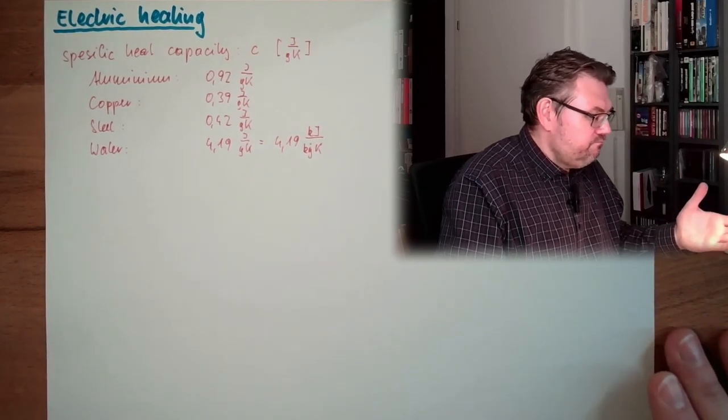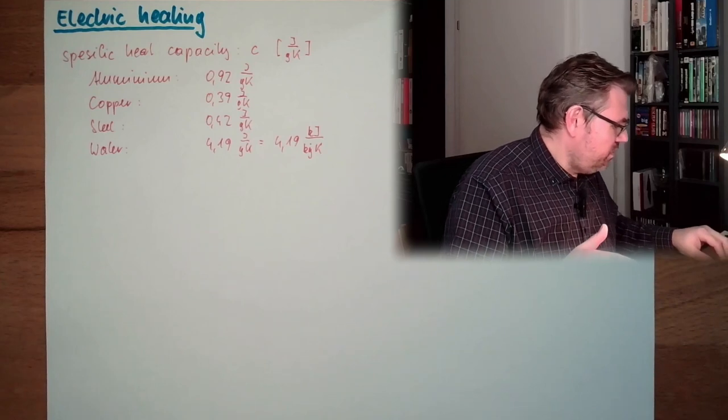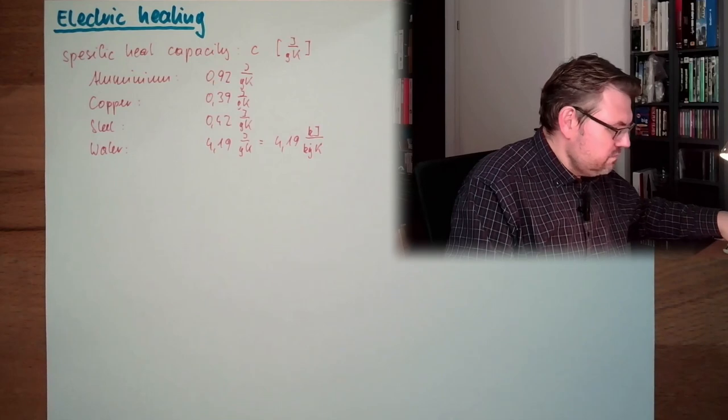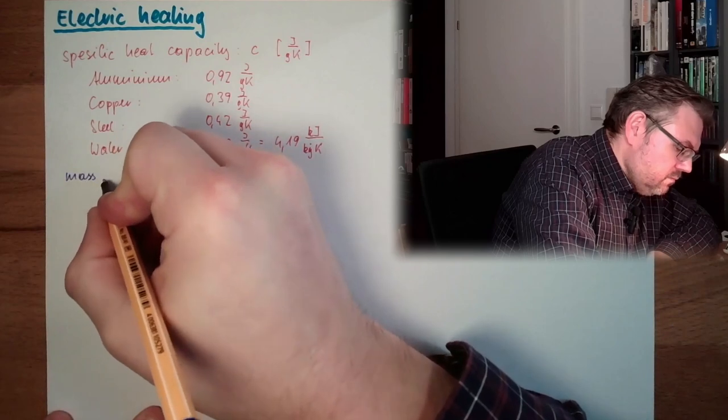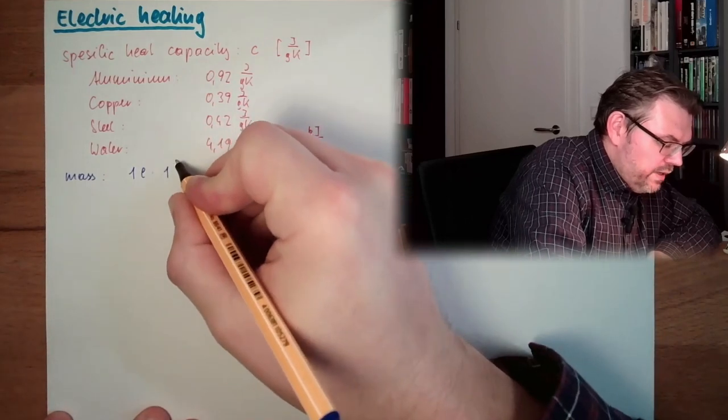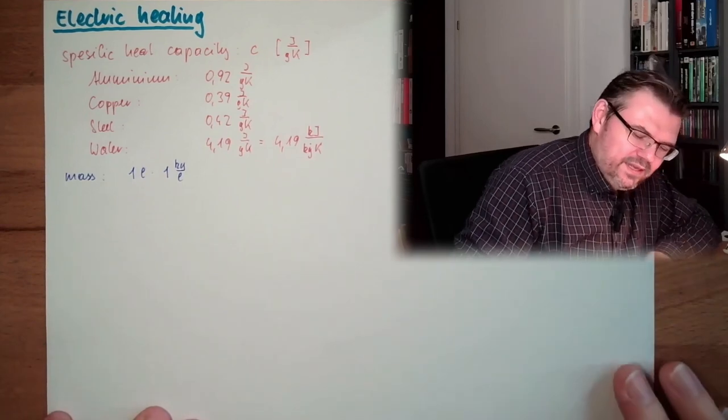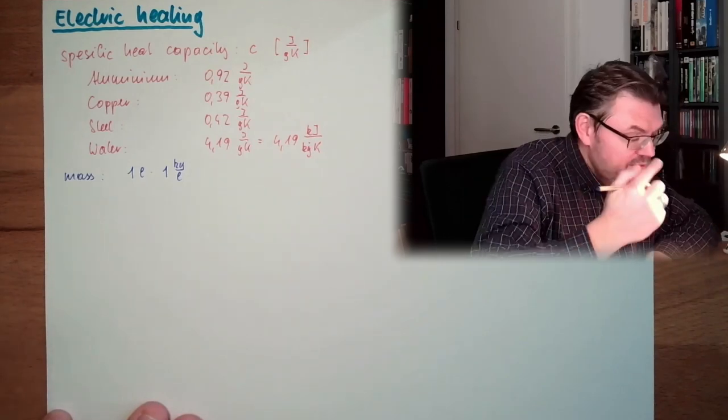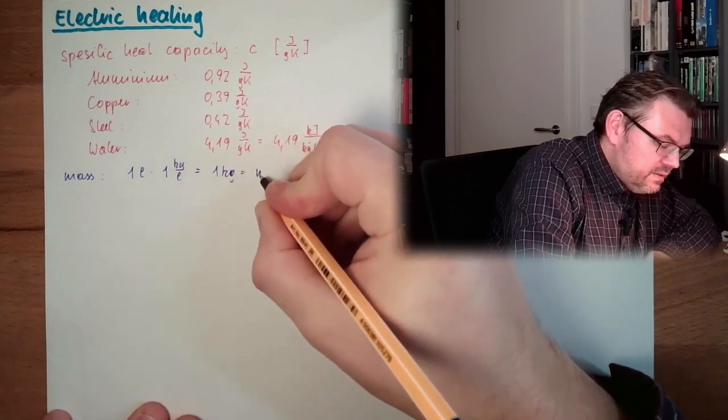Now, let's calculate how much water we have. What is the mass of the water? We have 1 liter of water multiplied by 1 kilogram per liter. This is the density. Of course, the density is changing. But let's not. So, we have 1 kilogram of water.